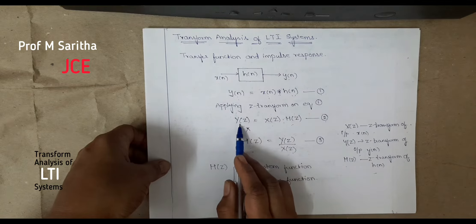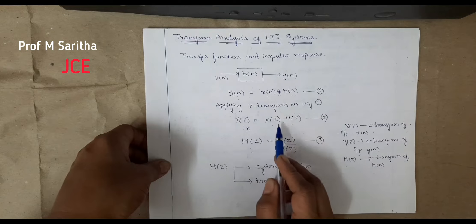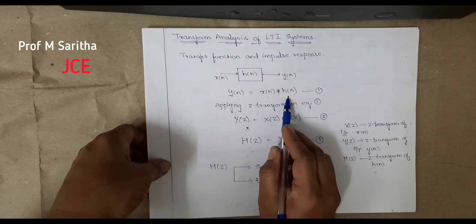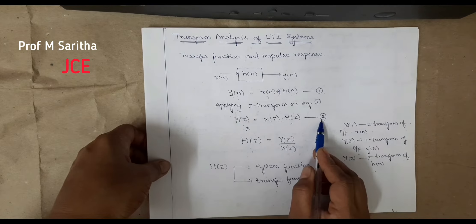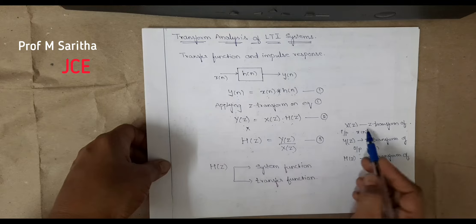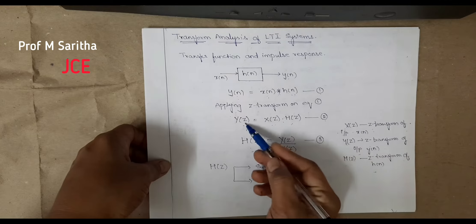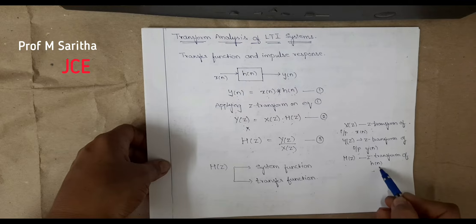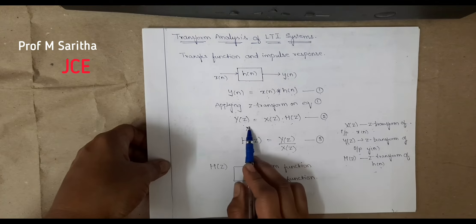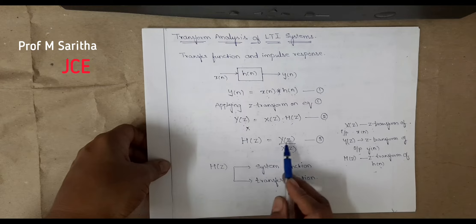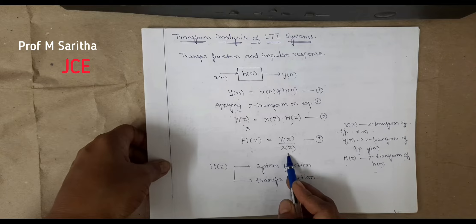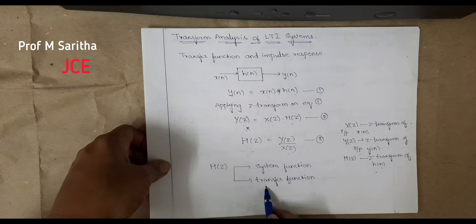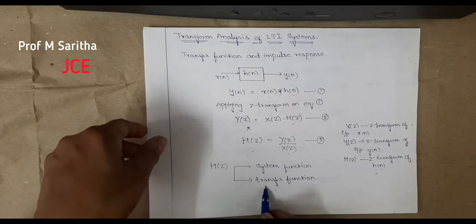Applying Z-transform to equation 1, we get: y(n) in Z-transform is Y(z), x(n) Z-transform is X(z), and convolution in the time domain becomes multiplication in the frequency domain, so h(n) Z-transform is H(z). This is equation 2, where X(z) is the Z-transform of the input, Y(z) is the Z-transform of the output, and H(z) is the Z-transform of the impulse response h(n). Rearranging equation 2, H(z) = Y(z) / X(z), which is also called the system function or transfer function.